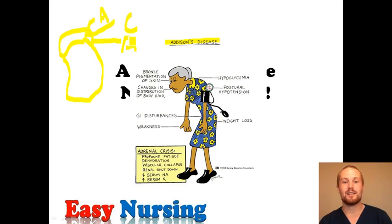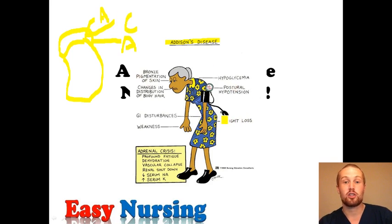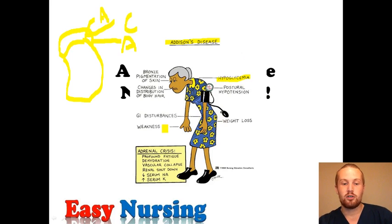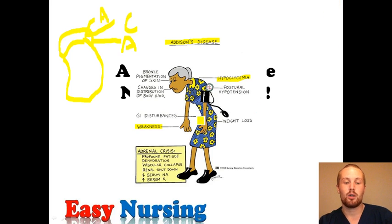With Addison's, you don't have enough of these hormones. When you have low cortisol levels — this is the stress hormone — you're going to have low blood sugars, because you don't have that stress hormone telling your body it needs sugar to keep going. You're also going to have some weakness. With aldosterone, you're going to see problems holding on to salt and water. Instead of holding on to salt, you'll be holding on to potassium. So with the low salt and high potassium, you're also going to have weakness, low fluids, hypotension, and a lot of dehydration.